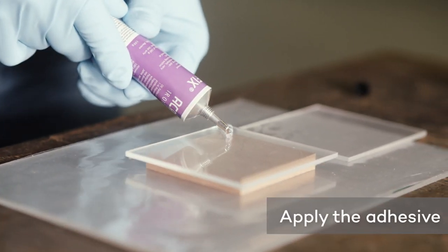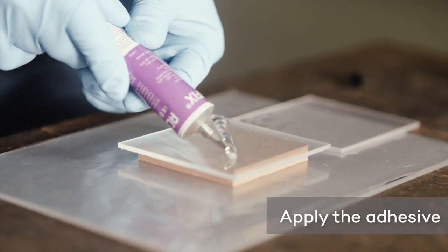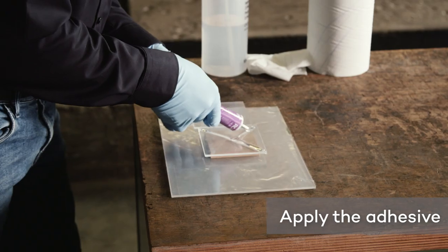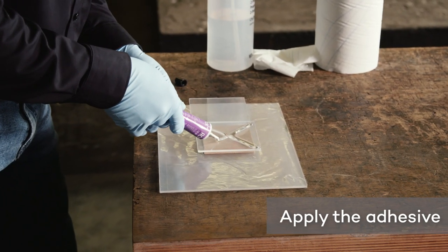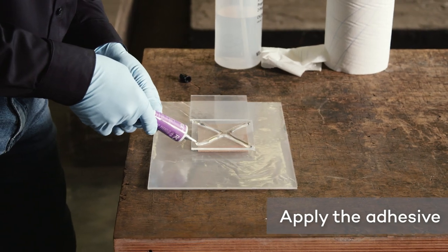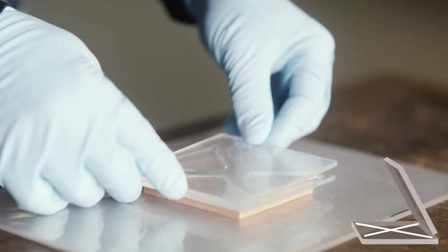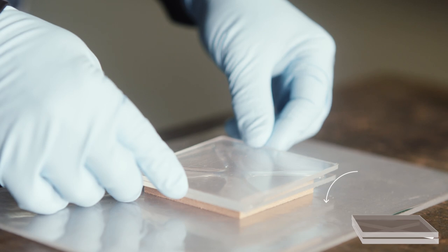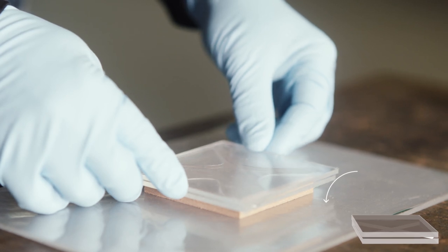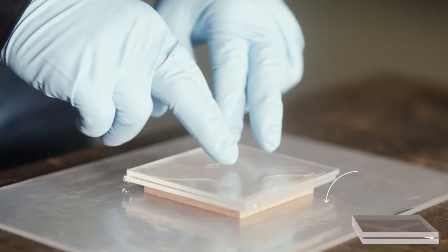Apply the adhesive diagonally to the lower sheet. Then, lay the top sheet into the adhesive by tilting it down from one edge. Any trapped air or bubbles are then pressed toward the edges and out.